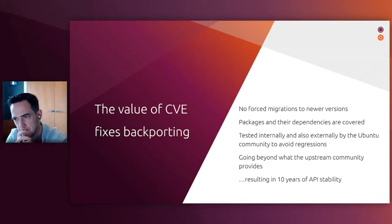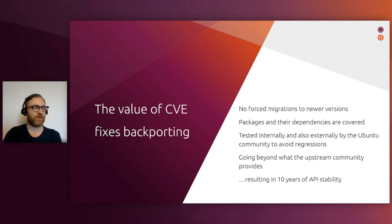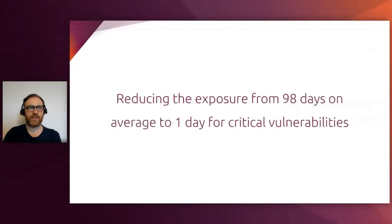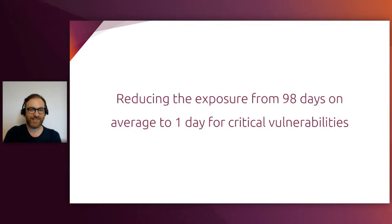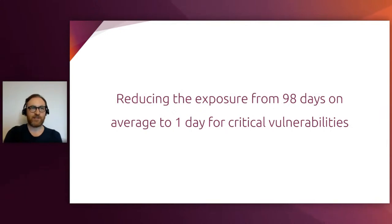The other technical area I wanted to cover is around the time to fix a vulnerability. I read a study the other day — I think it was Sonatype — saying that the average time to apply a fix that was already available, so available day zero or day one, is 98 days for an enterprise in the US to apply this fix across their production estate. For our internal KPIs, we do 24 hours for critical vulnerabilities.